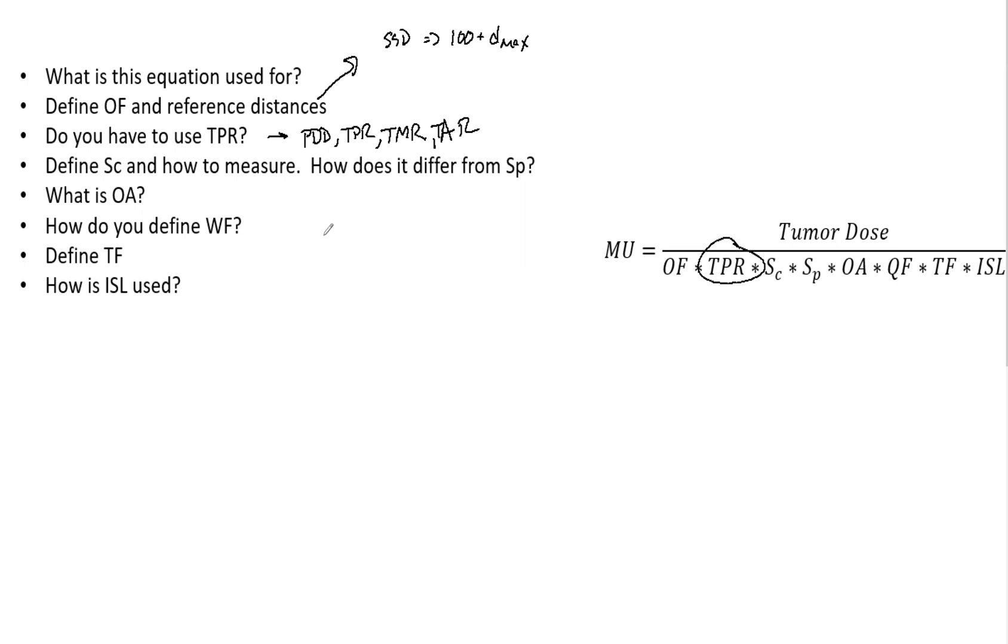SC and SP. SC here is the collimator scatter factor, which depends on the field size defined by the collimators. This must be measured in air with a buildup cap at a reference distance, which typically is 100 cm.